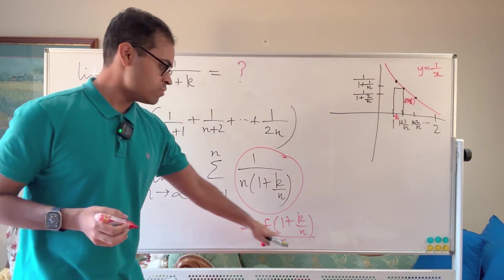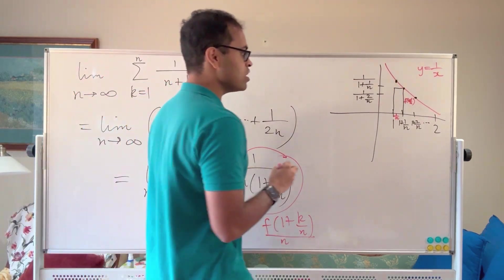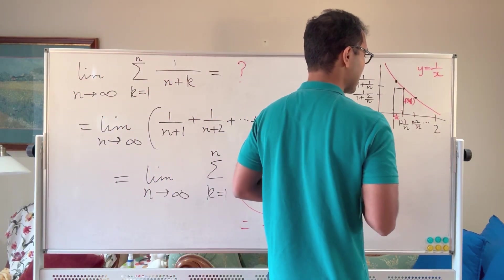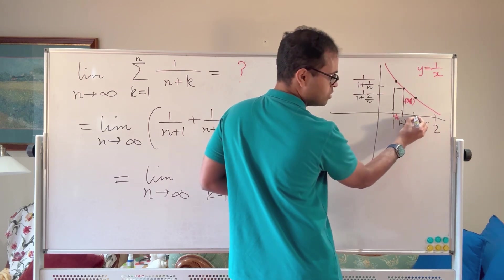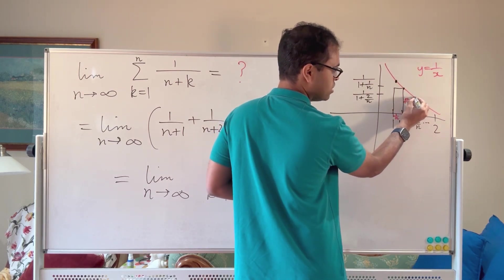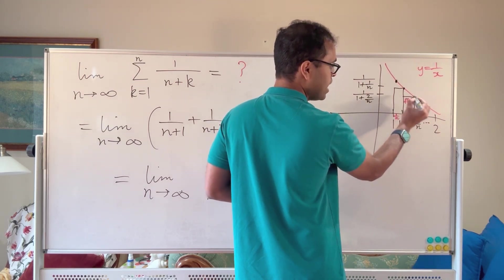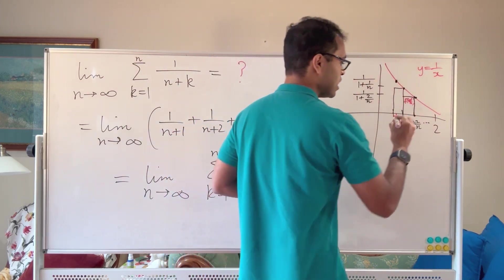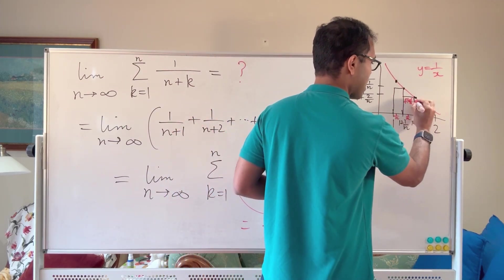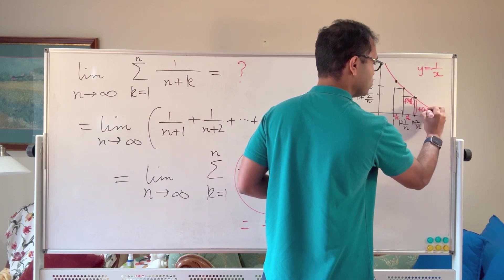So the area is going to be this expression when k is 1, and then you can go to k is 2. So this time its height is going to be f of 1 plus 2 over n, which is 1 over 1 plus 2 over n. And again, its base is going to be 1 over n. So again you have a base of 1 over n, but here you have a height of f of 1 plus 2 over n.